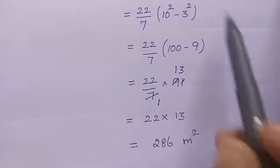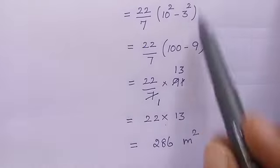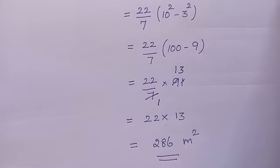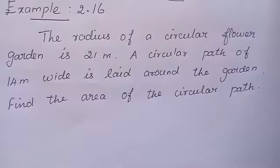The unit is meter, so the answer is in meter square. Therefore, the walking area equals 286 meter square. Next, Example 2.16.